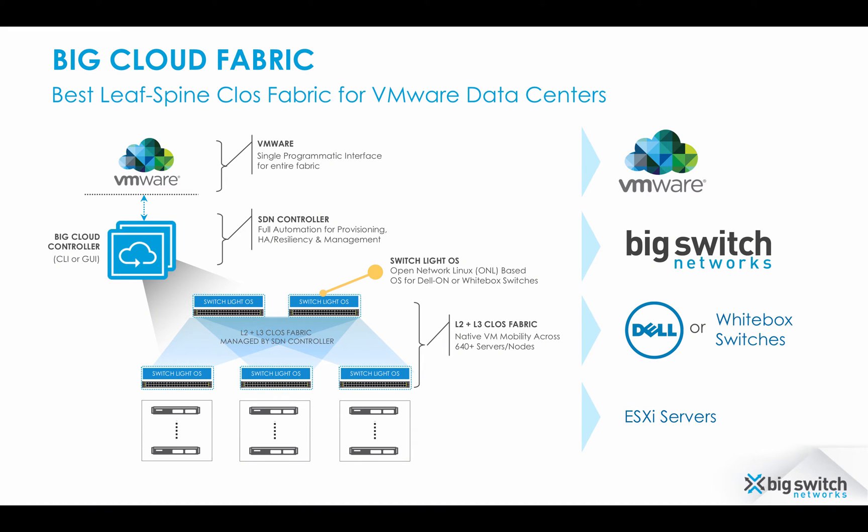Big Cloud Fabric brings network agility and the other benefits of virtualization to data centers through a controller-based software-defined network in Fabric. The product is based on leaf-spine architecture with open network hardware, running Switch Lite operating system. It is purpose-built to optimize VMware deployments in the data center.